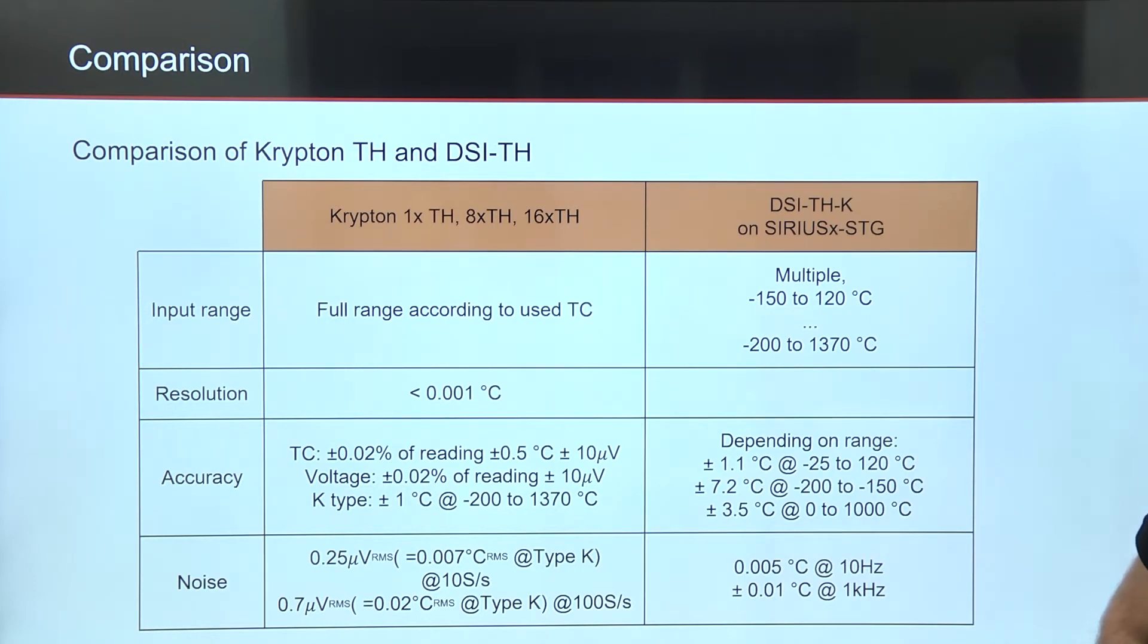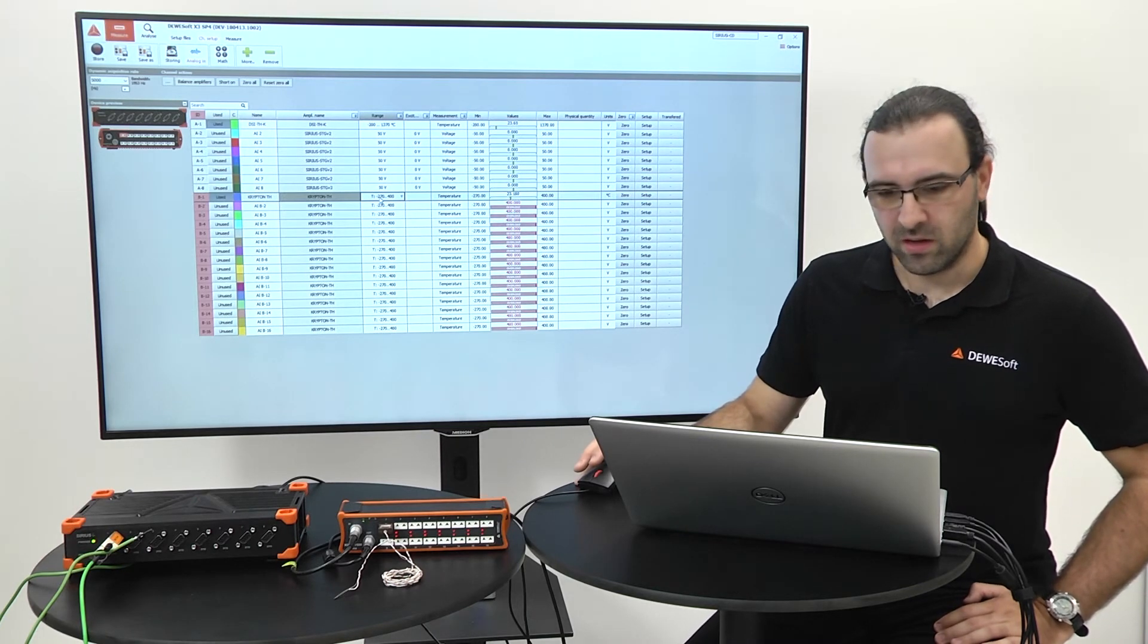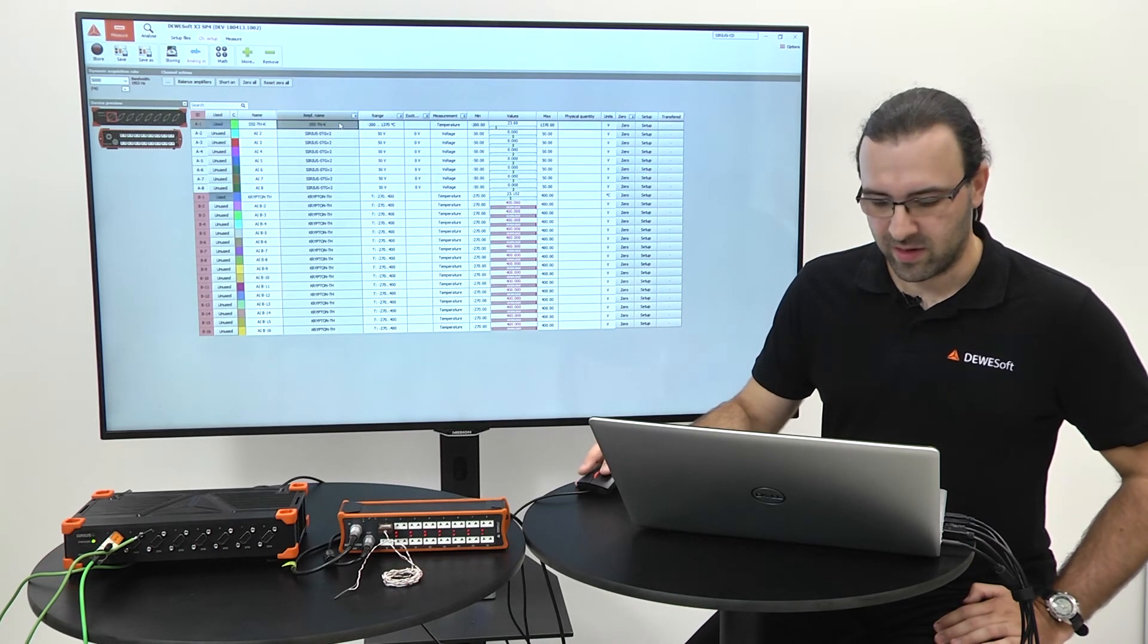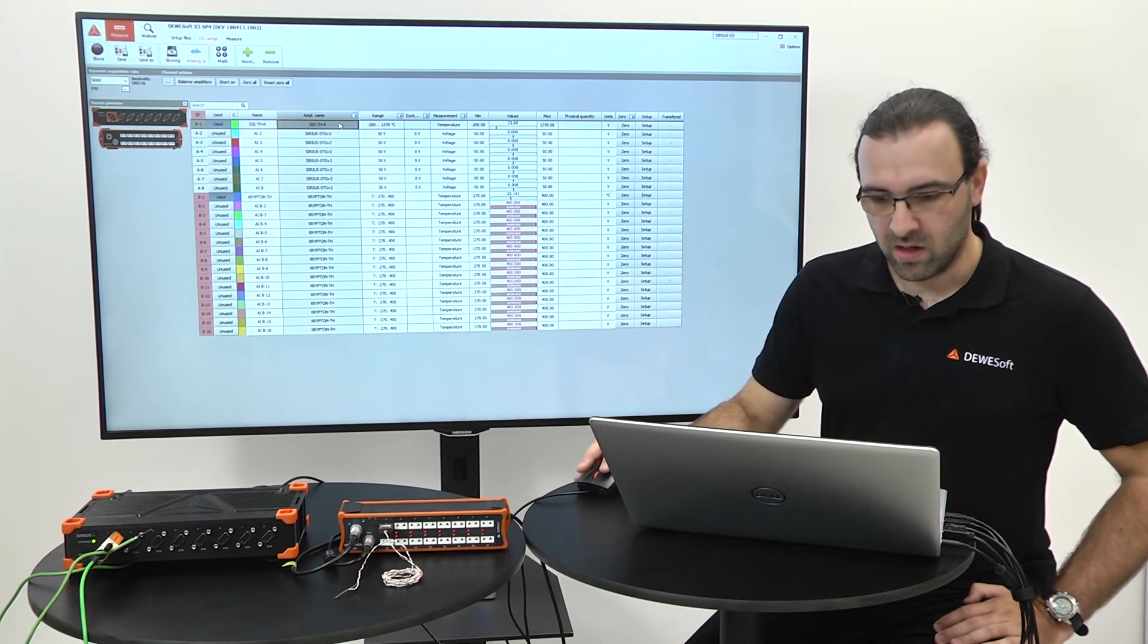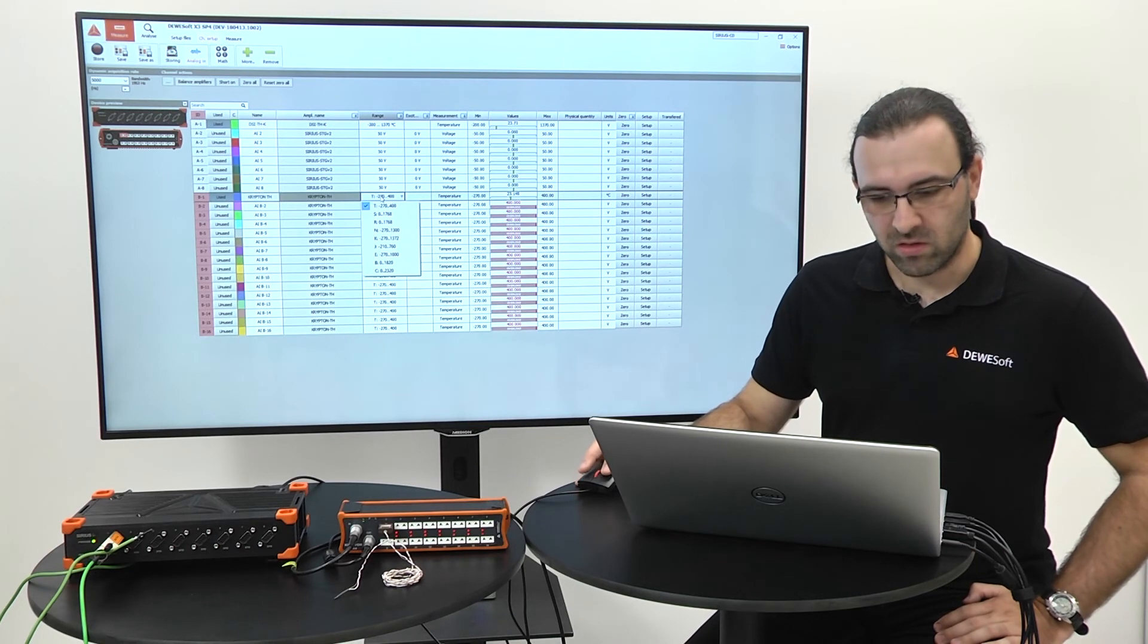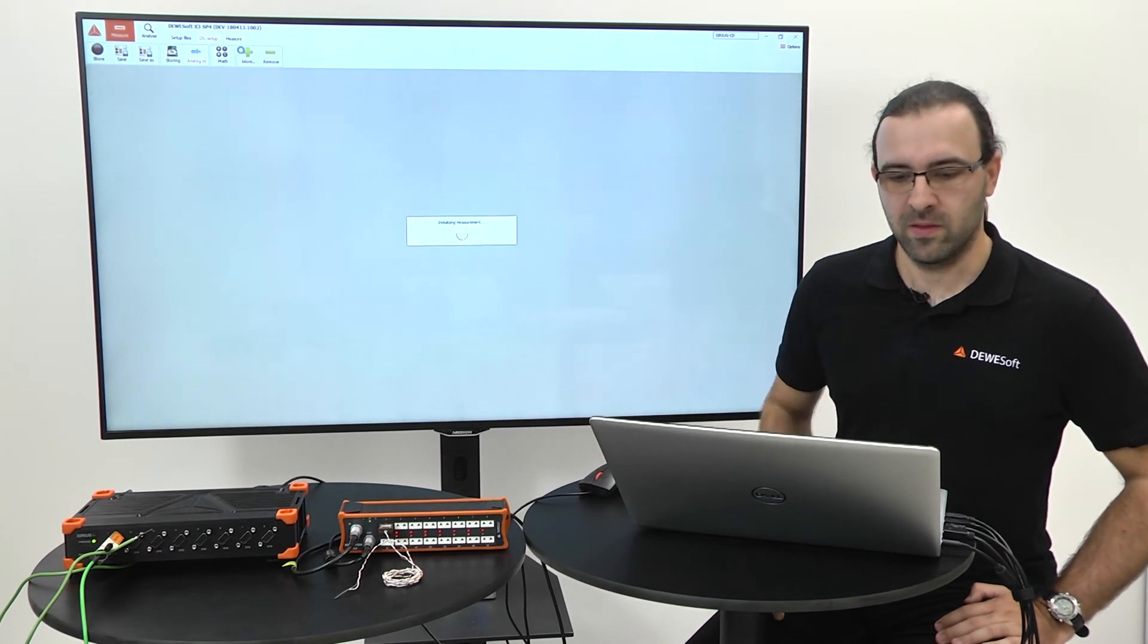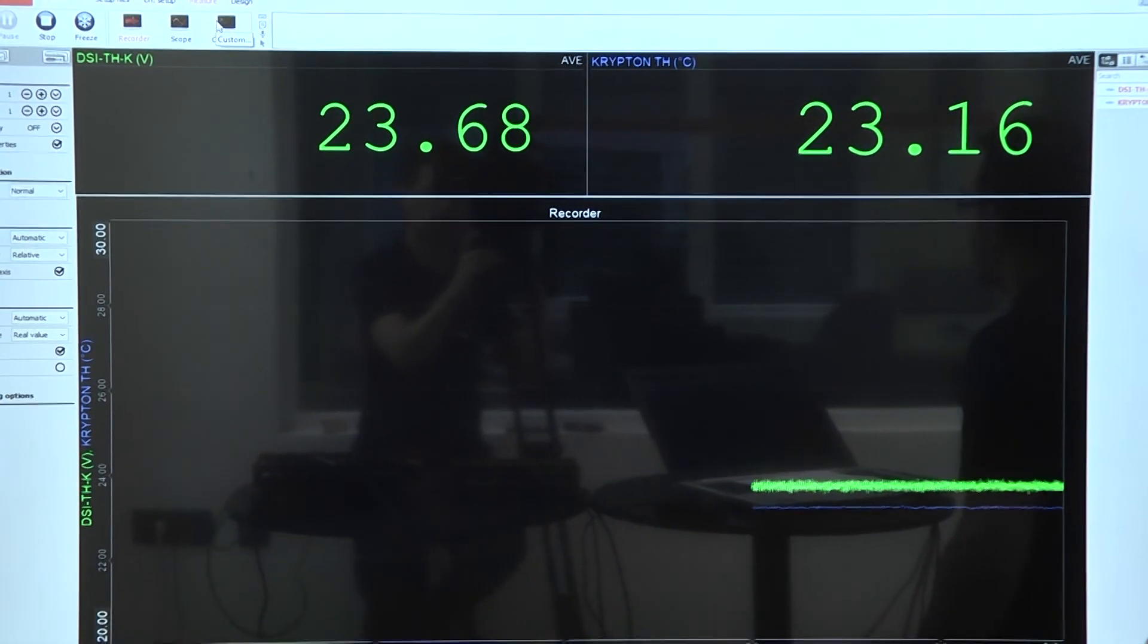Now let's go for a live demo. I have connected Sirius STG and Krypton TH to my computer. They are automatically detected in DeweSoft. DSI THK is automatically detected with Sirius module. Care must be taken with Krypton TH to select the correct thermocouple type in setup. When this is done, you just go to measure and you're measuring temperature with DeweSoft.